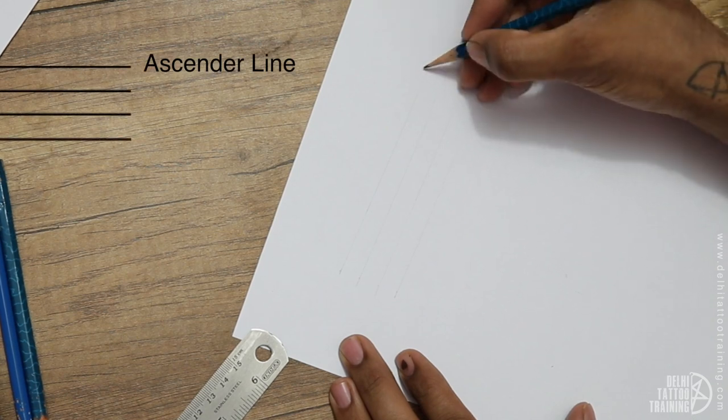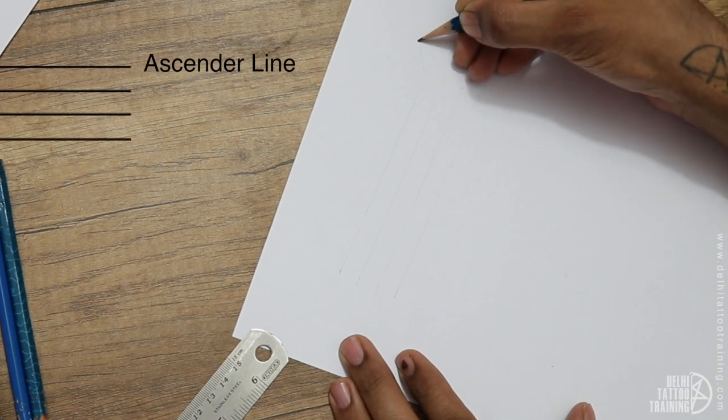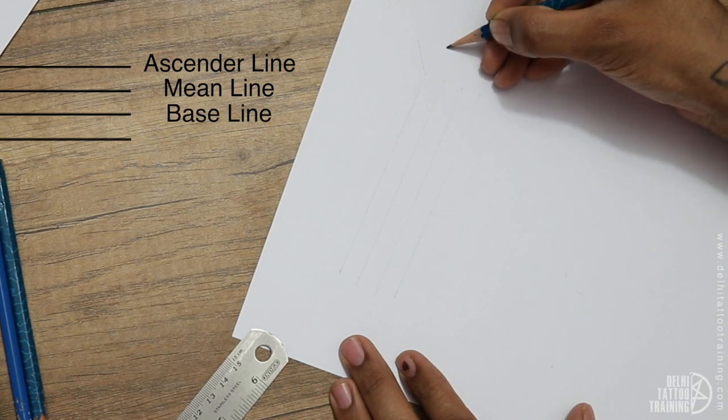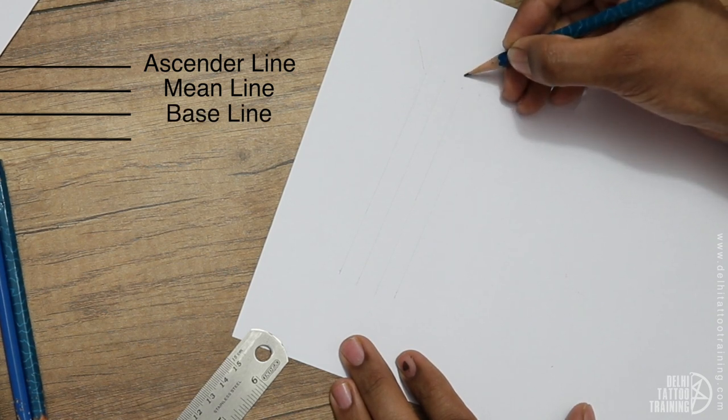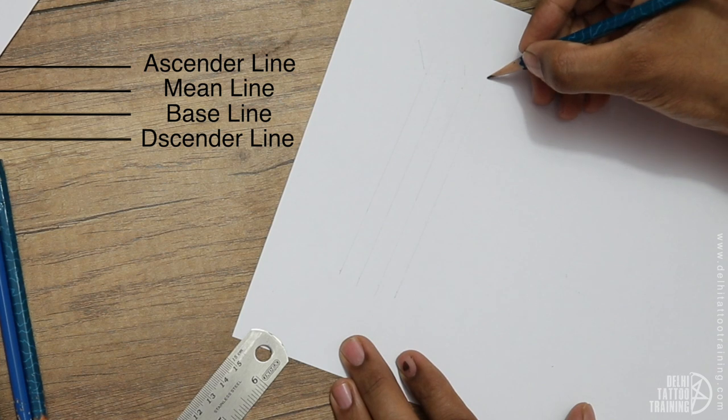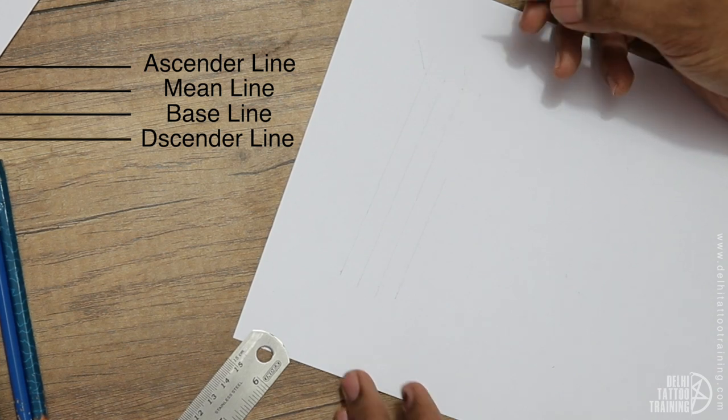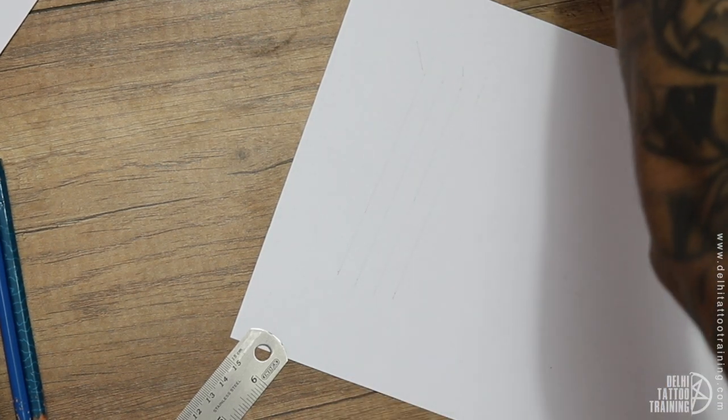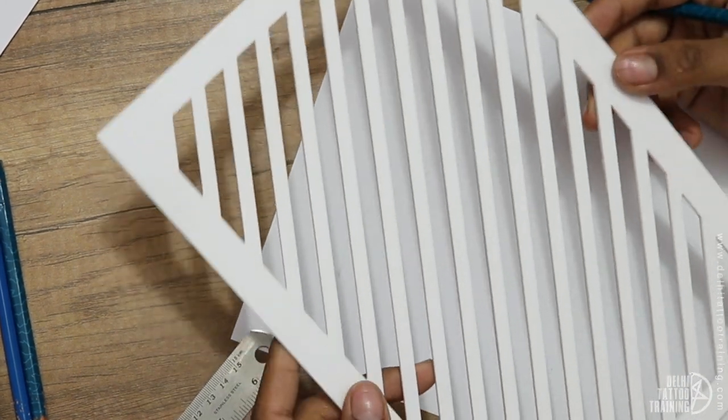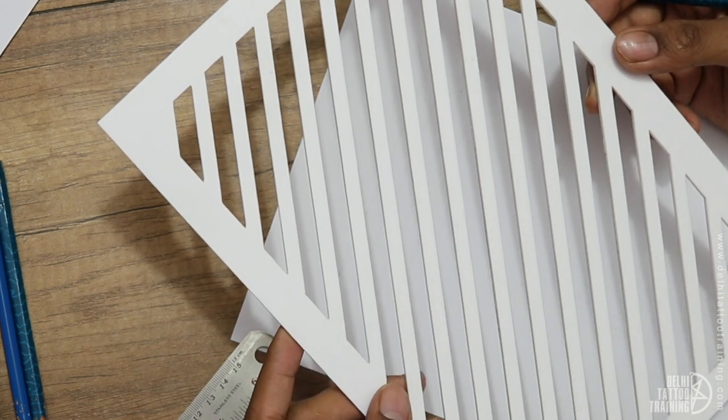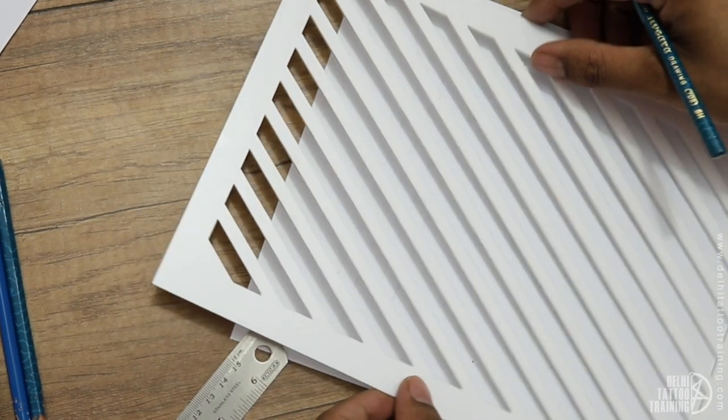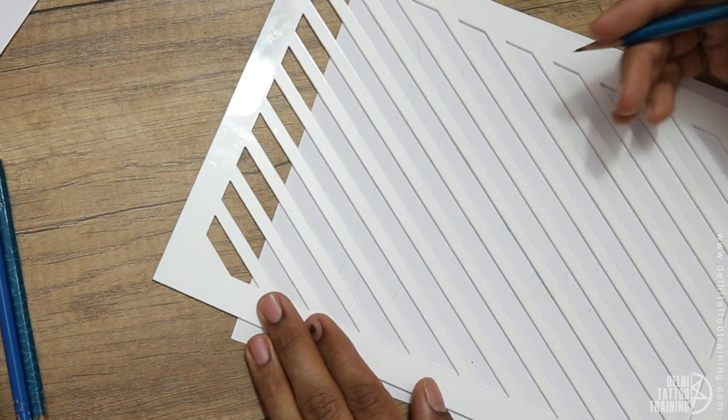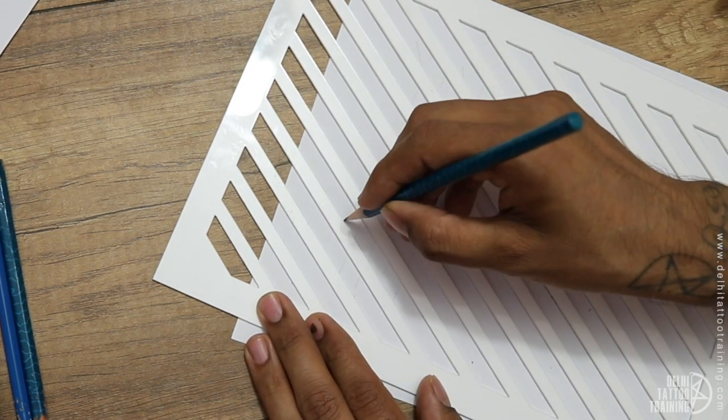I have to ensure that the lines have to be parallel to each other. The first line is called the ascender line, the second one is called the mean line, the third one is the baseline, and the fourth one is the descender line. Here I have the stencil guide. This guide helps me to give a 45 degree angle to all my parallel lines. A 45 degree angle is very good for calligraphy.